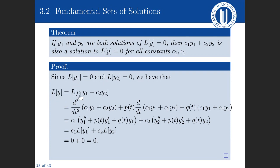Here's a simple proof: we know L of y1 equals zero and L of y2 equals zero. Computing L of (c1 y1 plus c2 y2) gives c1 times L of y1 plus c2 times L of y2, which equals c1 times zero plus c2 times zero equals zero. Because L is a linear operator, any linear combination of solutions is also a solution.